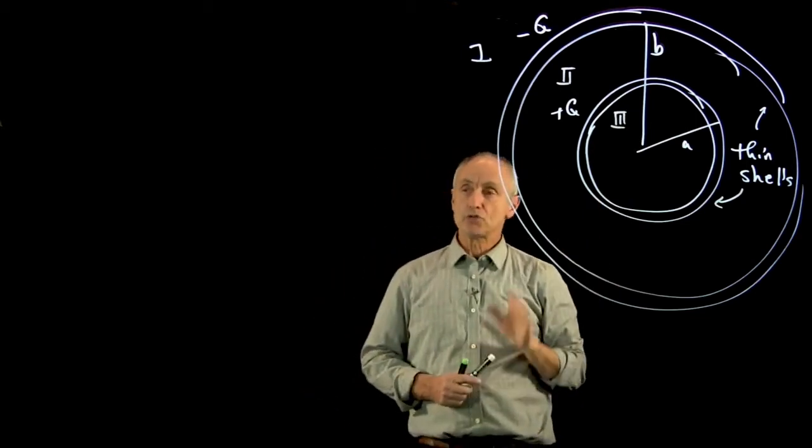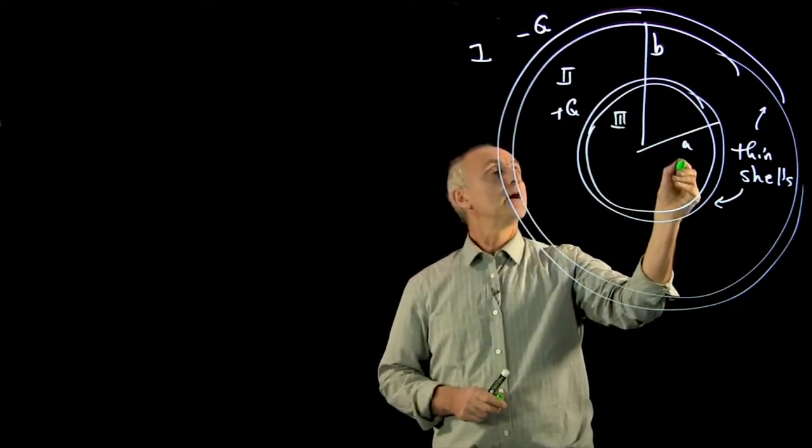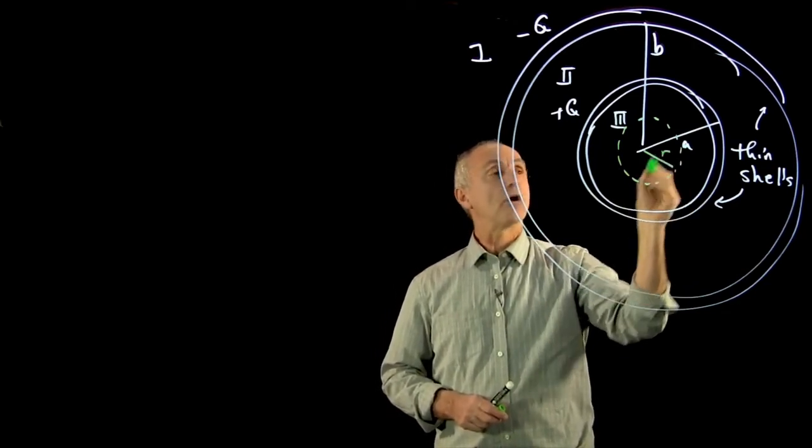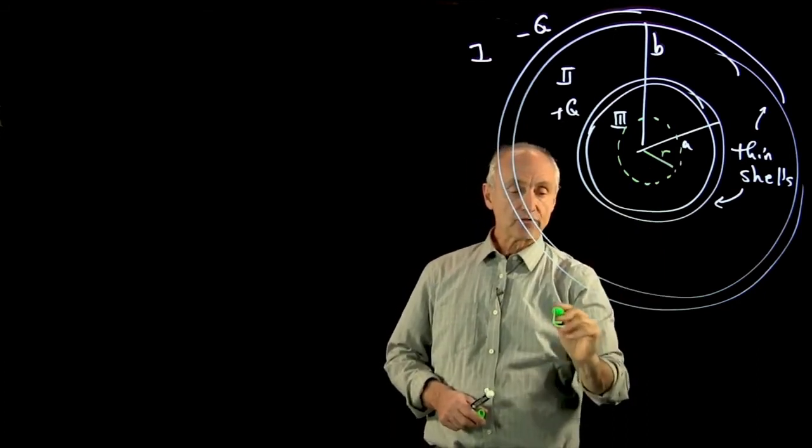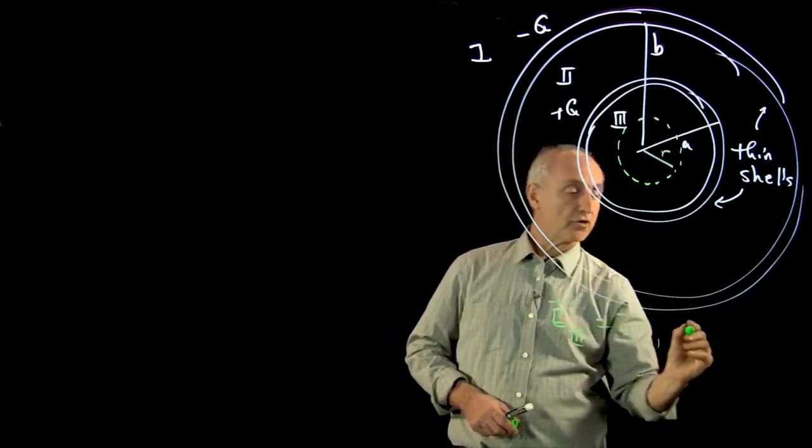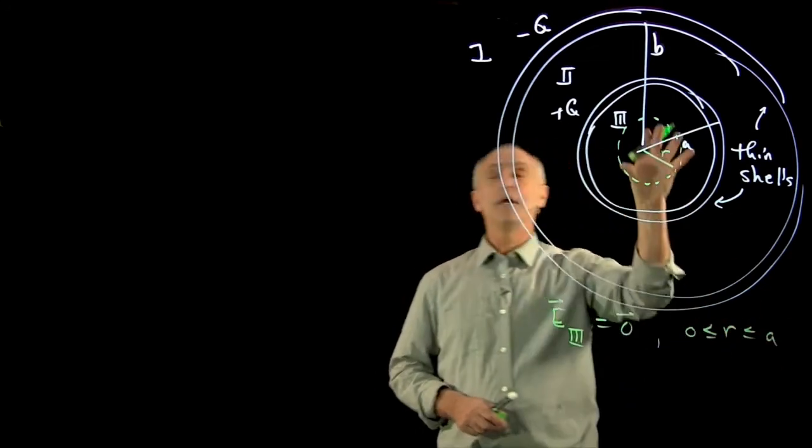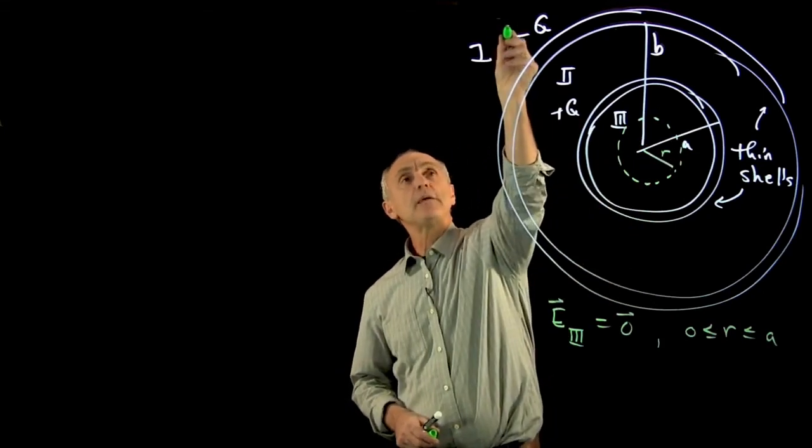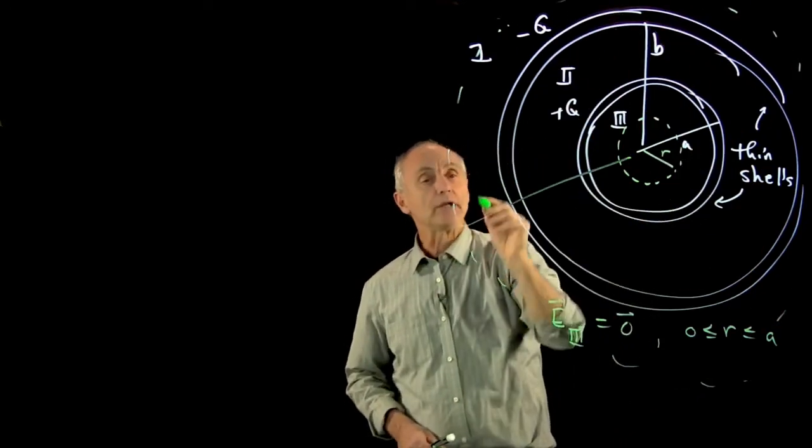Now, I want to do two of those regions very quickly. So for the region 3, I'm going to pick a Gaussian surface of radius r. And in region 3, there's no charge enclosed. So the electric field inside is 0 for 0 less than r less than a. Why? Because there's no charge enclosed in our Gaussian surface.